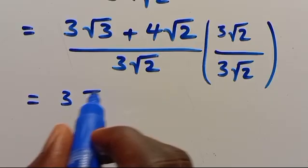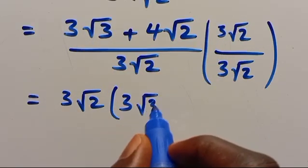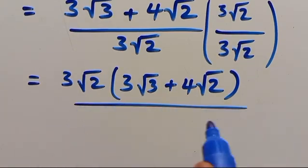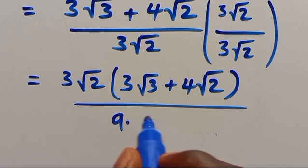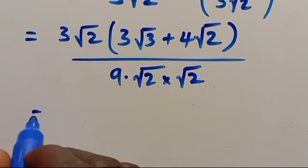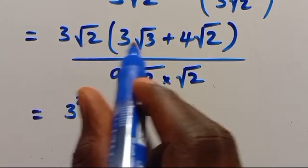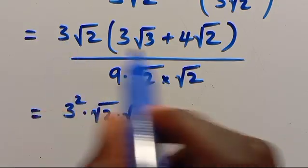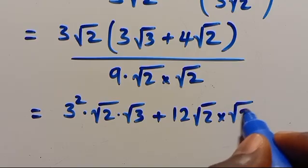So now let's work this out. From here, multiplying root 2 through the whole numerator: 3 times root 2 times root 3, plus 4 multiplied by root 2, and we close this over the denominator. This gives us 9 times root 2 times root 2 in the denominator. In the numerator we have 3 squared times 2, times root 2 times root 3, plus 12 times root 2 times root 2.